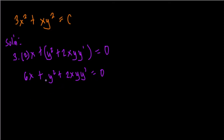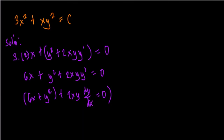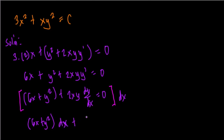Grouping the terms, we have 6x plus y squared plus 2xy times dy/dx equals 0. Multiplying both sides by dx, we get: (6x plus y squared) dx plus 2xy dy equals 0.